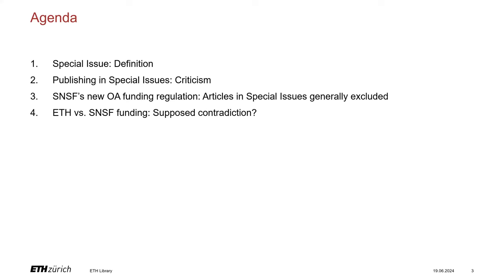After giving you a brief definition of special issues, I will emphasize why the SNSF has excluded articles in special issues from its open access funding, based on widely discussed criticisms. In conclusion, I will provide a comparison of ETH versus SNSF open access funding, highlighting alternative funding options in case authors have an SNSF grant.